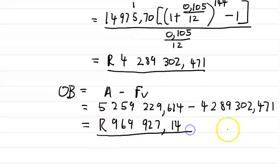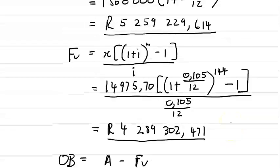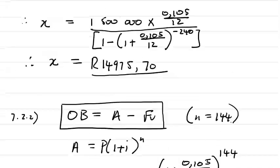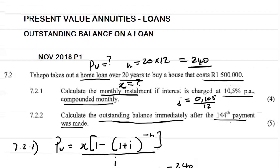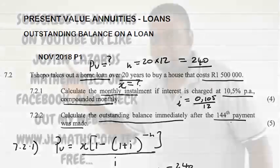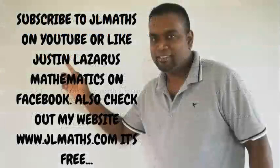Just to quickly recap: this is a question on present value annuities which deals with loans. If you haven't subscribed already, subscribe to JR Maths and I'll catch you in the next video.